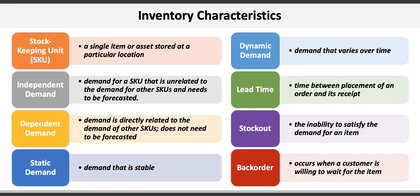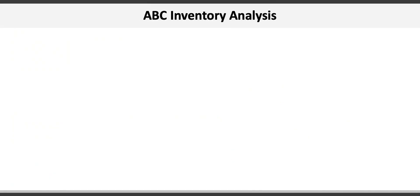Inventory suffers from what I call the goldilocks problem: if we don't have enough we stock out and lose sales, and if we have too much we incur costs. The trick is to get it just right, and that's actually pretty complicated. One of the simpler ways of managing inventory is through ABC inventory analysis, which gives managers useful information to identify the best methods to control each category of inventory.